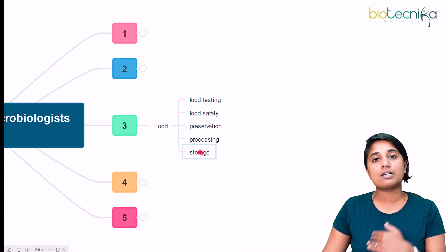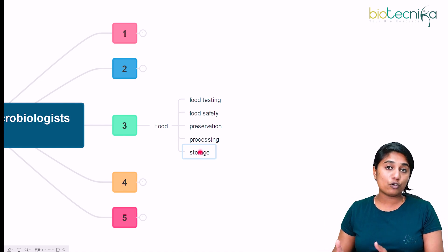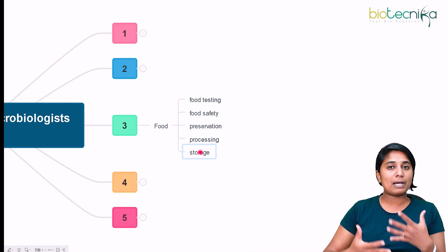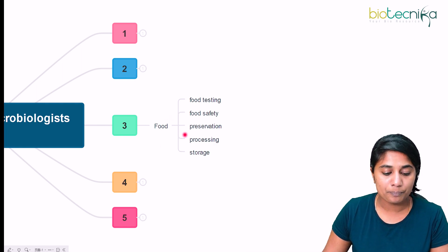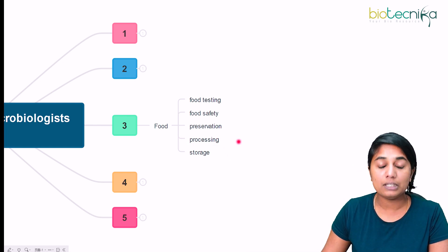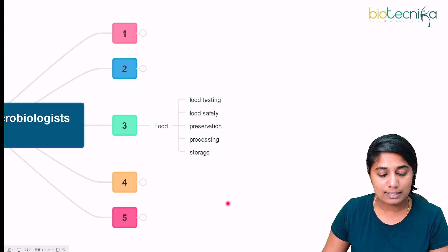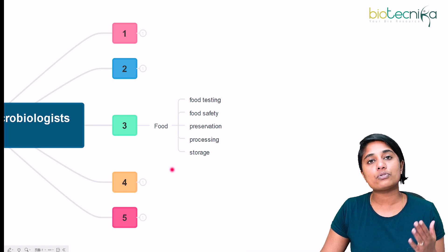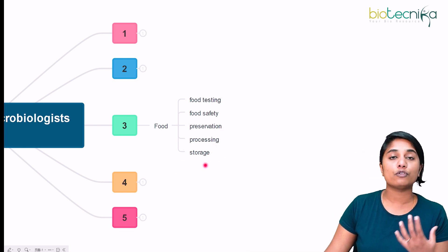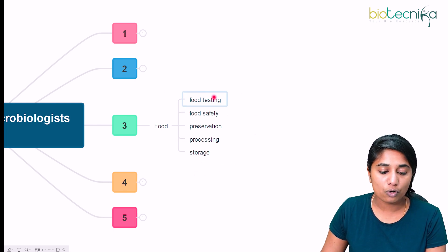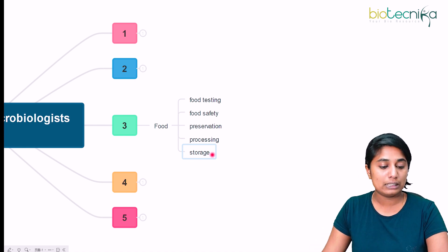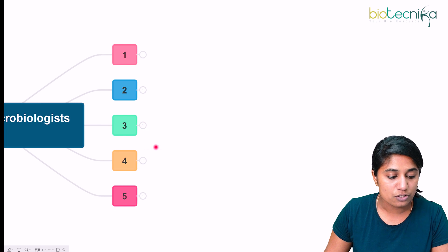Second is food processing — how microorganisms are used in processing food, such as fermentation, brewery industries, or bread manufacturing. Lastly, the storage of food — preservation is also a form of food storage. These are the different roles you can play as a microbiologist entering the food industry in India.